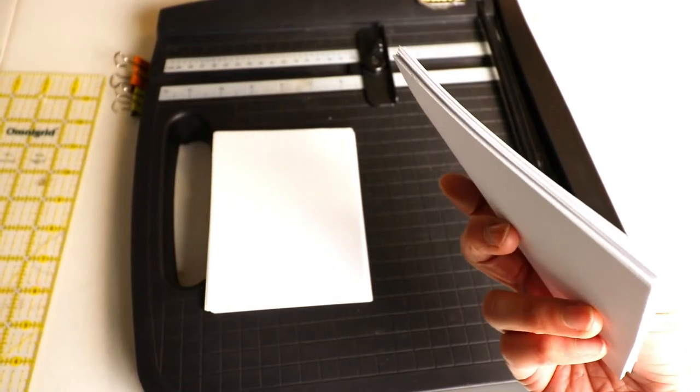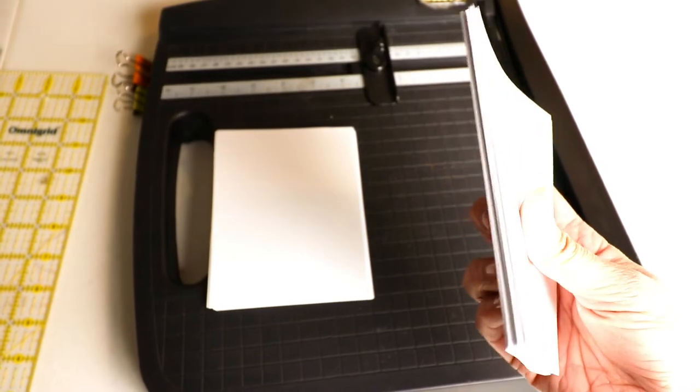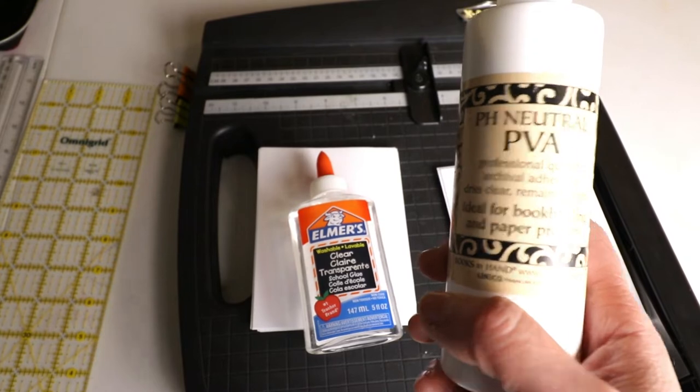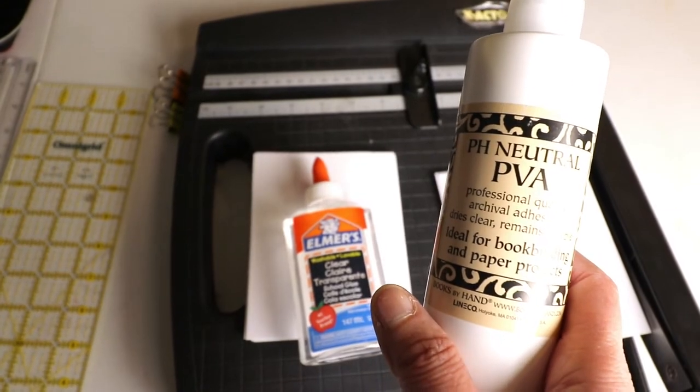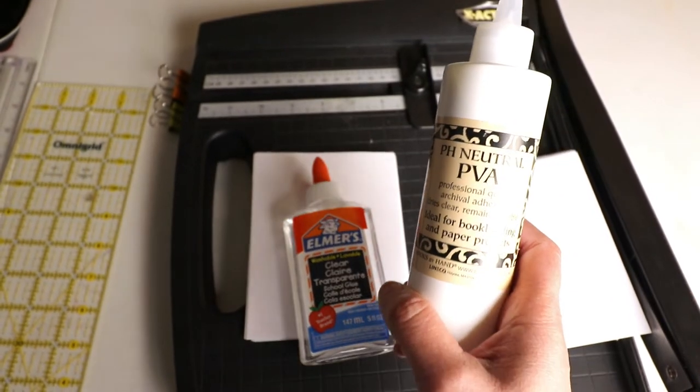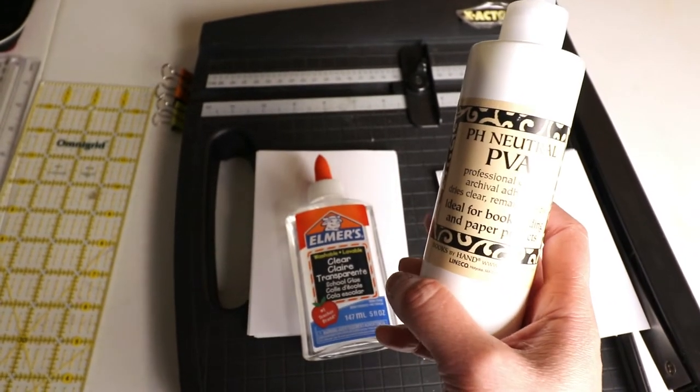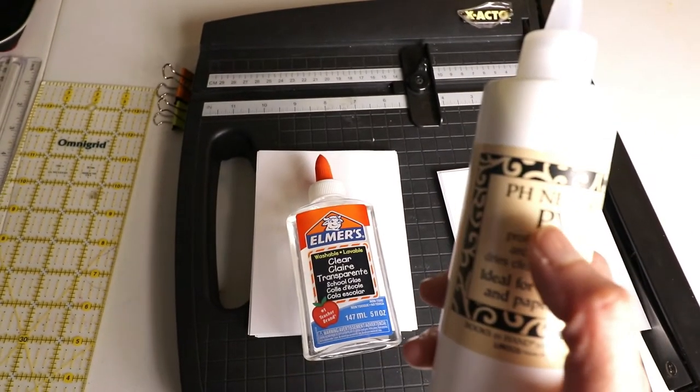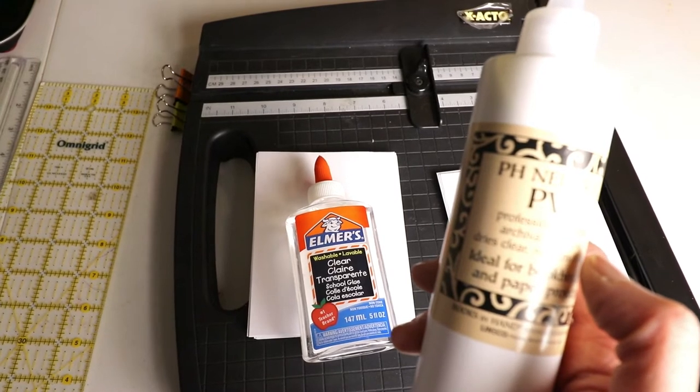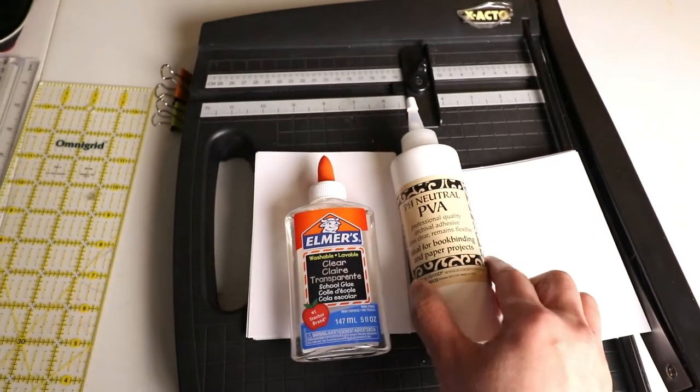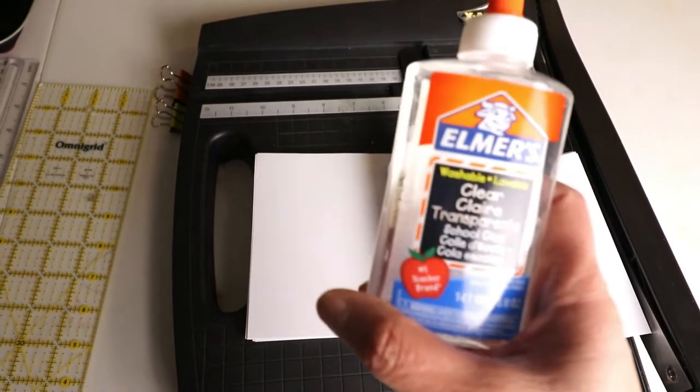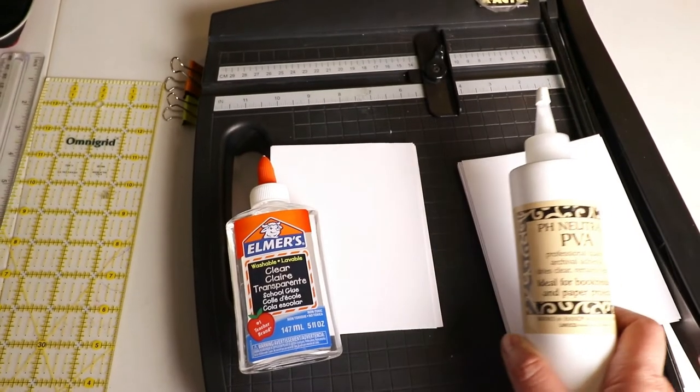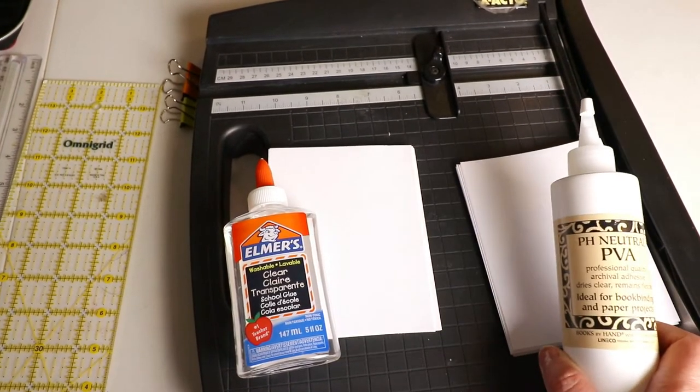The next step is to apply some glue to the spine. If you are serious with book binding, I highly recommend the PVA glue. It's not really that expensive. I got mine from Amazon. It says it dries clear and remains flexible, and it's also pH neutral so you will not yellow the paper. If you don't want to spend extra money, you can just use Elmer's glue or the common white glue. We are going to try both glues and compare the result.